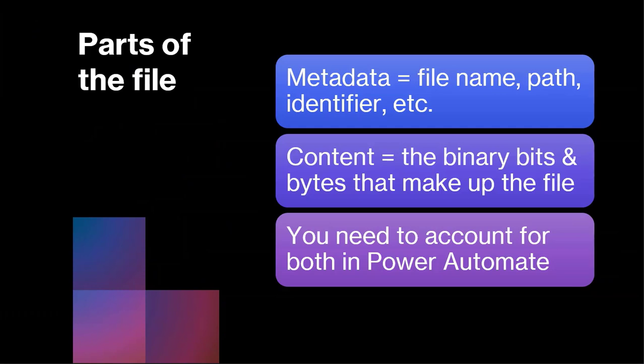There is the file metadata — things like the file name, the path, and the identifier — and then there's the file content, which is the actual data inside the file. If it's a text document, it's the text; if it's an Excel spreadsheet, it's the workbooks and worksheets. When working with files in Power Automate, you need to account for both, because most actions will ask for both the file name and file content.